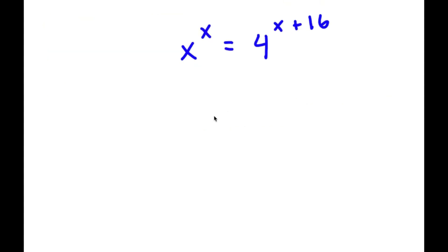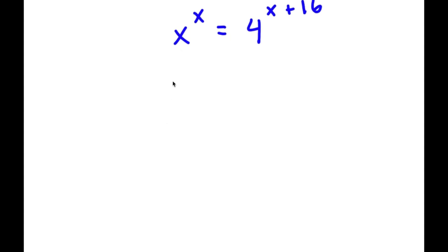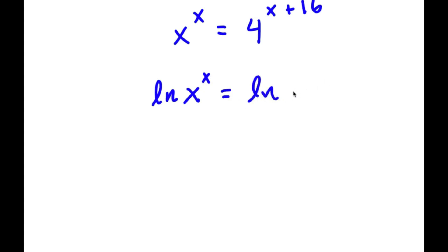In this problem, I have x to the power of x is equal to 4 to the power of x plus 16. The first thing I'm going to do is take the ln, or natural log, on both sides. So now I have ln x to the power of x is equal to ln of 4 to the power of x plus 16.